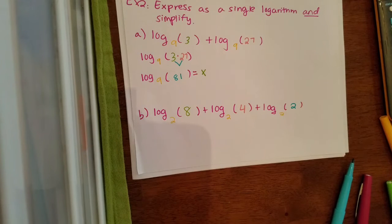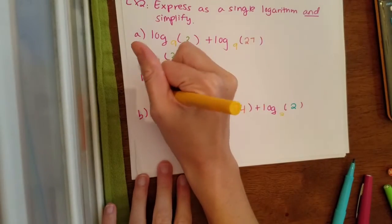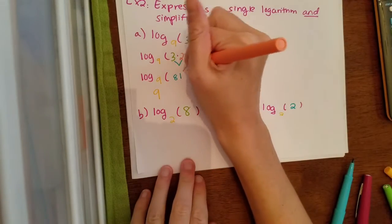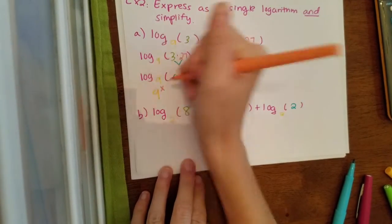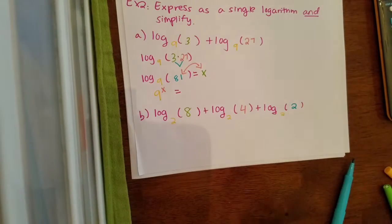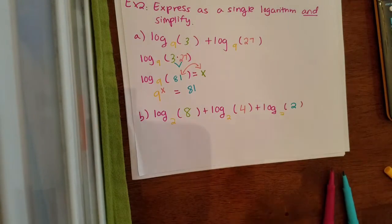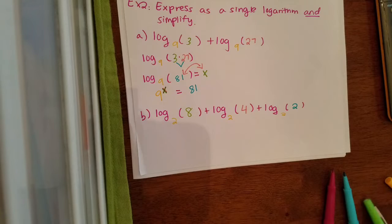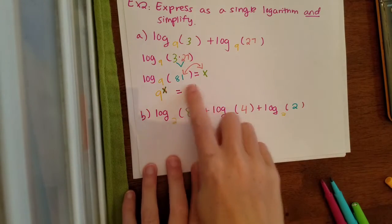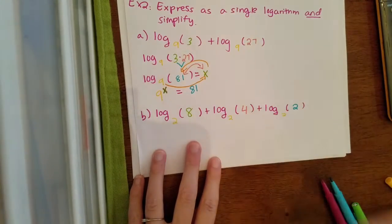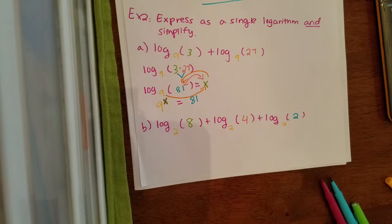The first step is to convert this into an exponential. Remember, the base of the exponential is the base of my log, which is 9, so my base will remain as 9. Then these two are going to trade places: x will hop to one side with my 9, and 81 will hop to the other side of my equal sign. So: 9 raised to the x power equals 81.